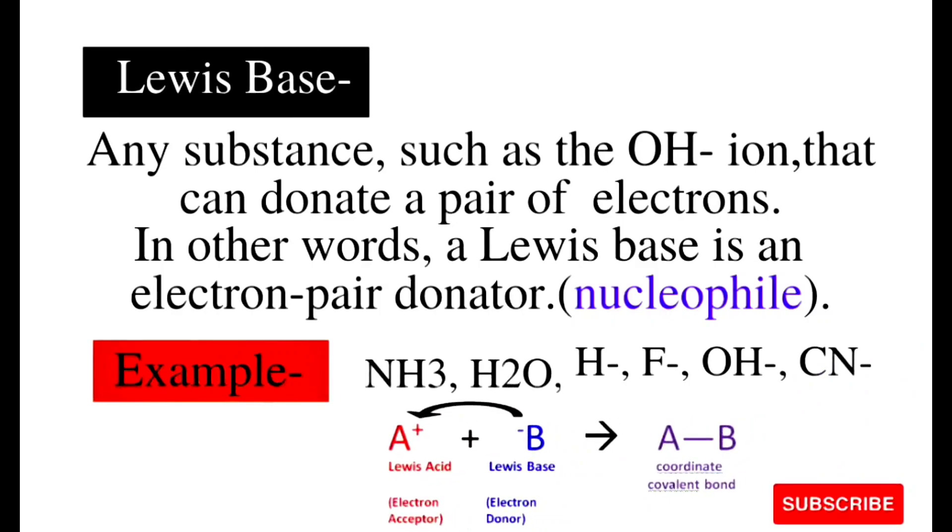Now Lewis base. Any substance such as the hydroxide ion that can donate a pair of electrons. Lewis base is an electron pair donator and this is what we call nucleophile. Here are some examples like ammonia, water, hydroxide ion. You can see the reaction here. The electron acceptor is called Lewis acid and the electron donor is Lewis base. They react and a coordinate covalent bond is created. So this is Lewis base and Lewis acid.